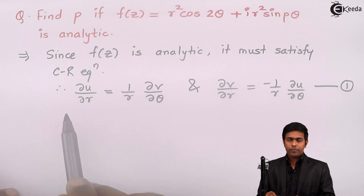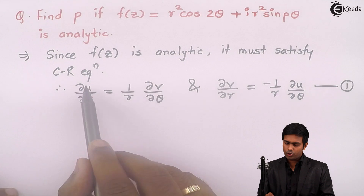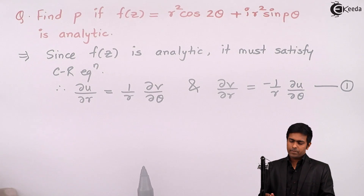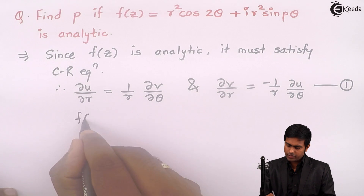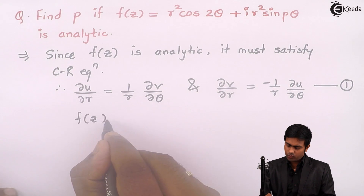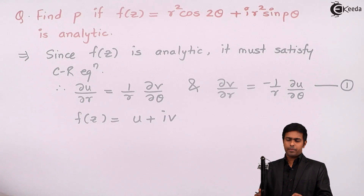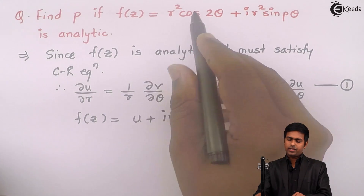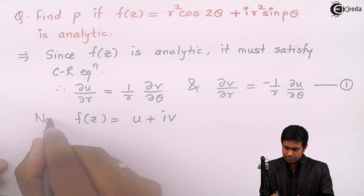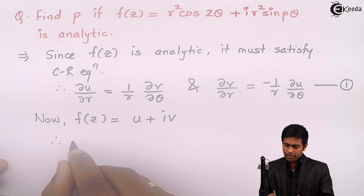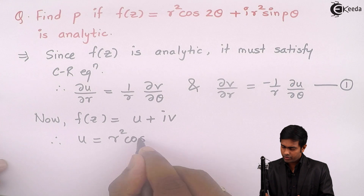Now to find these values, we need to find u and v first. We know that f of z equals u plus iv, meaning the real part is u and the imaginary part is v. Therefore, u is equal to r square cos of 2 theta, and v is equal to r square sin of p theta.